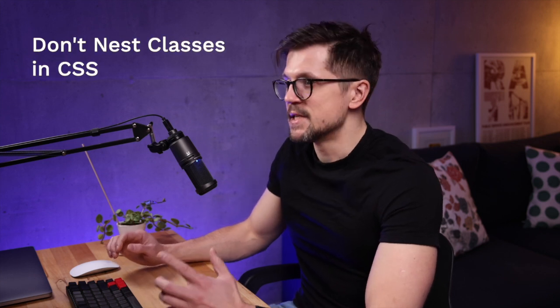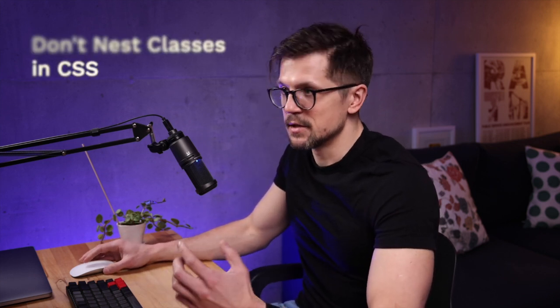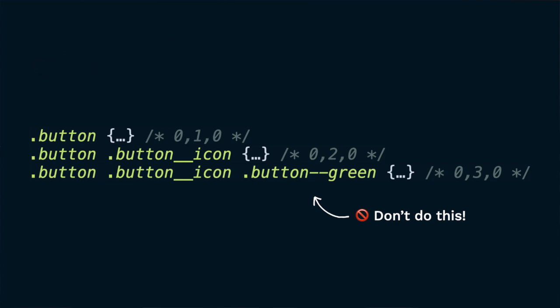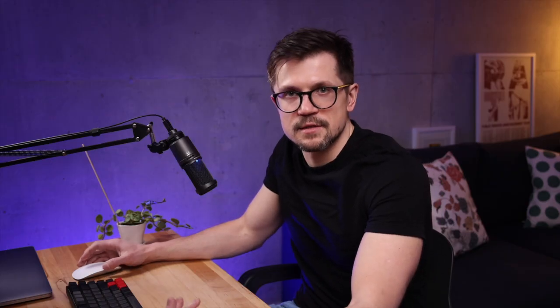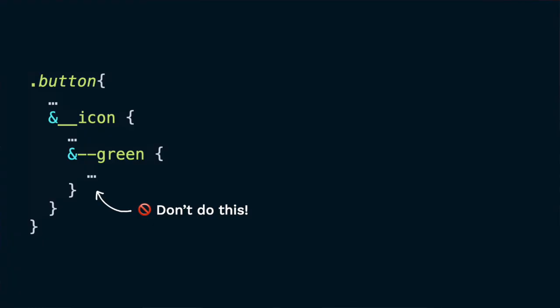The next mistake is nesting classes in CSS. It defeats the purpose of BEM, because the whole point of the underscore and double-dash notation is to keep styles flat and specificity low. Nesting increases specificity of elements for no reason. Always strive for low specificity and flat styles. Concatenating selectors also falls into this bucket — it's a terrible pattern because it makes elements unsearchable.